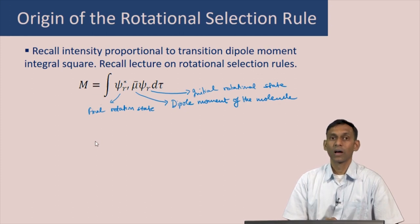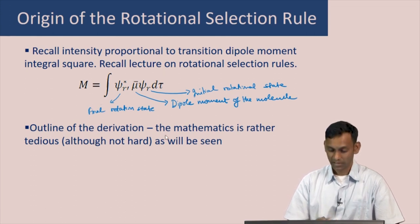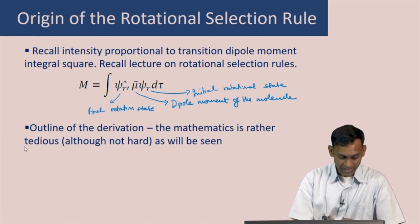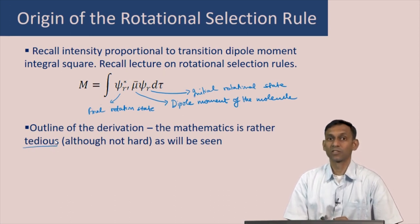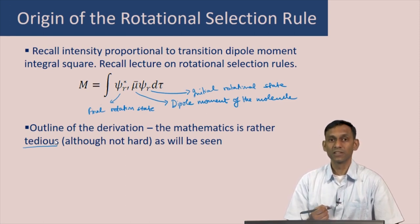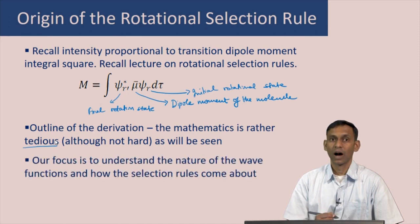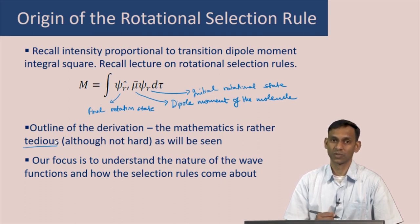We will now outline the derivation of this selection rule, keeping in mind that the mathematics is rather tedious — not really hard, but there are a lot of steps and it will take a long time to go through all of them. So in the interest of time, I will show you how the derivation works without going through every step. Our focus is to understand the nature of the wave function and how the rotational selection rule comes about.